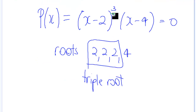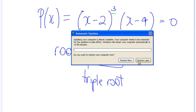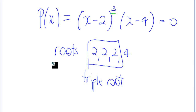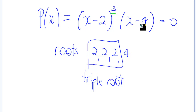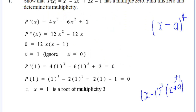Hopefully we're clear that if we see (x minus 2)^3 times (x minus 4) equal to zero, then x equals 2 is three of the roots of this polynomial, which has four roots. We'd call it a triple root. The other root would be x equals 4.